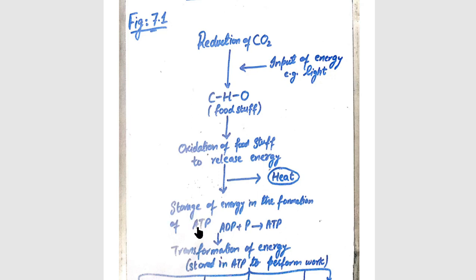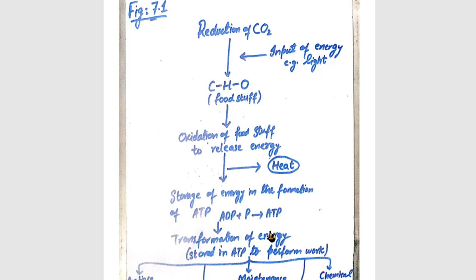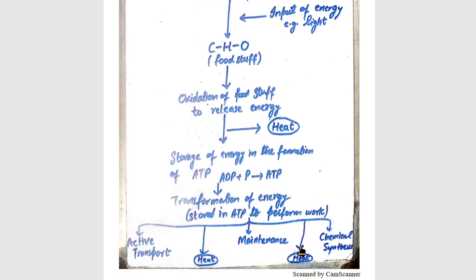Let's look at ATP. ATP means adenosine triphosphate. What happens further is that the potential energy stored in ATP bonds is released through transformation so that the cell can perform life activities and work. This transformation serves three things: active transport, maintenance, and chemical synthesis.